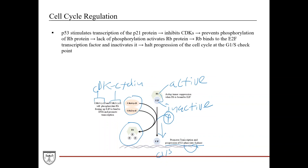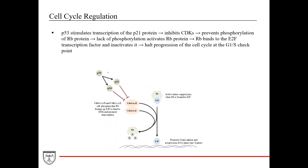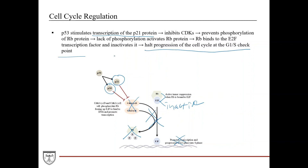At that G1-S checkpoint, E2F can be responsible for moving the cycle through into the S phase. When RB protein is active and bound to E2F, this is tumor suppression—the process doesn't proceed. P53 stimulates transcription of the P21 and P16 proteins, which inhibit the CDK-cyclin complexes. Without that phosphorylation, RB and E2F remain bound, E2F is inactive, and progression of the cell cycle is halted at the G1-S checkpoint, allowing DNA repair to occur.